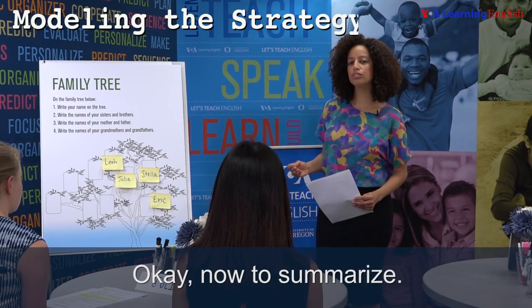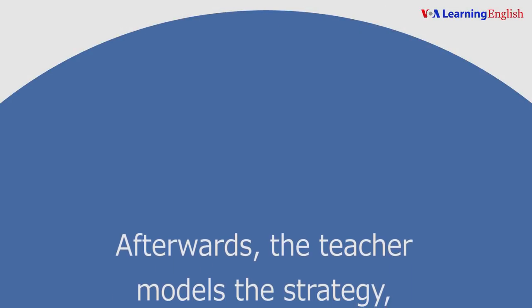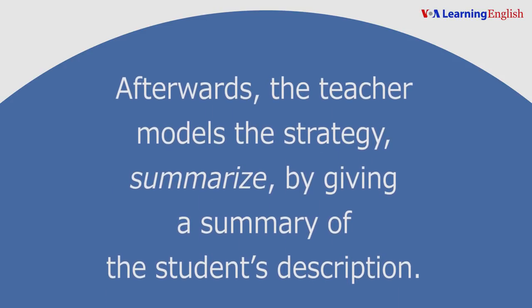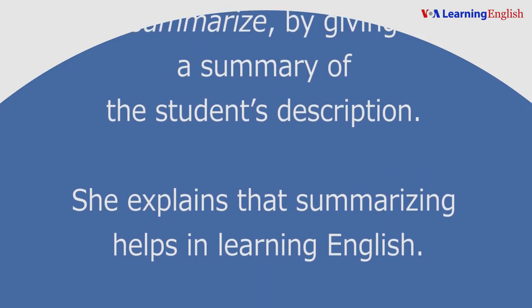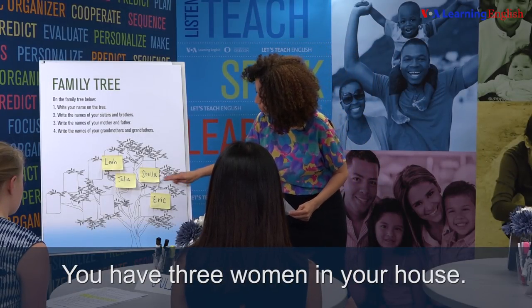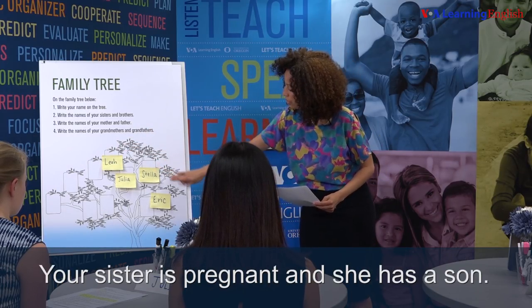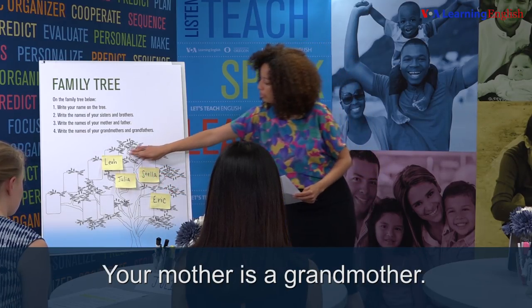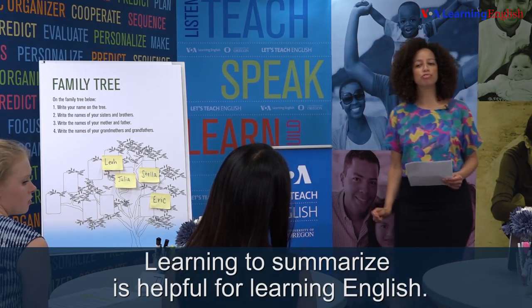Okay, now to summarize. Modeling the strategy: Afterwards, the teacher models the strategy, Summarize, by giving a summary of the student's description. She explains that summarizing helps in learning English. You have three women in your house. Your sister is pregnant and she has a son. You are an aunt. Your mother is a grandmother. Learning to summarize is helpful for learning English.